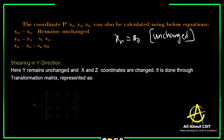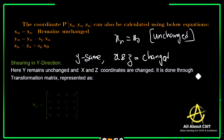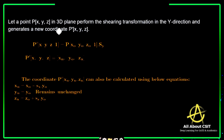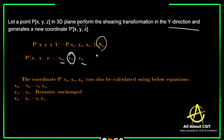For shearing in the Y direction, Y remains the same and X and Z are changed. The transformation matrix shows that Sy remains the same, so the shearing factor of Y is not required — only the Sx and Sz shearing factors are needed. If a point P in a 3D plane performs a shearing transformation in the Y direction, the new coordinates Xn, Yn, Zn have Y-naught unchanged, while Xn and Zn change by applying the shearing factors.